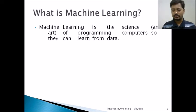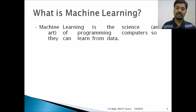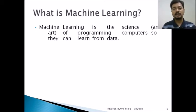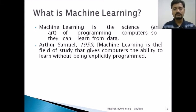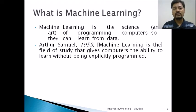Let's come to the definition of machine learning. Machine learning is the science and art of programming computers so that the computer can learn from data — the same way human beings learn. Arthur Samuel defines machine learning as the field of study that gives computers the ability to learn without being explicitly programmed. We need not hard-code the computer, because once it is hard-coded, there is no scope of learning.